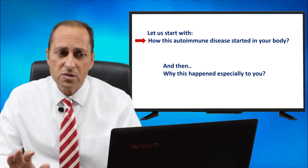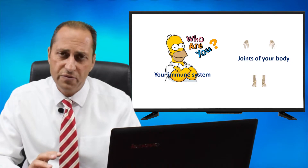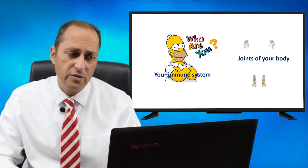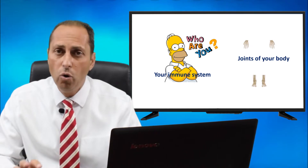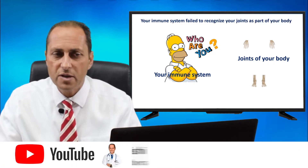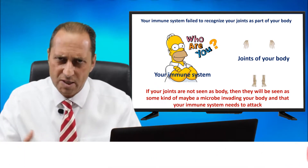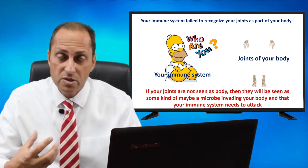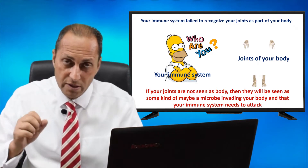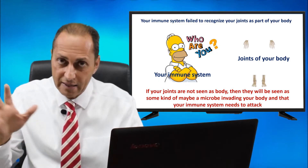How did this autoimmune disease start in your body? It started like this. Now, you see in the figure here — this is your immune system. Those are the joints of your body, and your immune system is looking at the joints and asking, 'Who are you?' Your immune system actually failed to recognize your joints as part of your body. If the joints are not seen as part of my body, then the immune system will probably see them as some kind of microbe coming from outside the body and trying to invade it. So the natural thing is it has to attack them back and get rid of them.